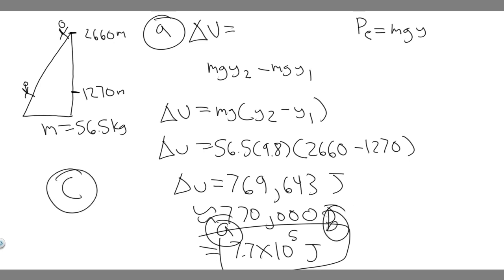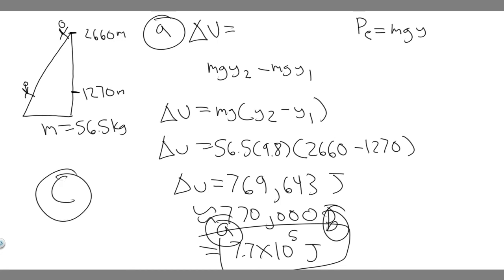For Part C: can the actual work done be greater than this? The answer is yes. The actual work is almost always going to be greater because of forces like air resistance and friction — these forces require additional work beyond the minimum. So the minimum work is just the lower bound, and your answer to Part C is yes, due to non-conservative forces like friction and air resistance.